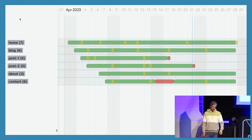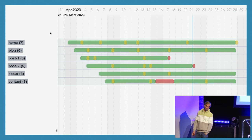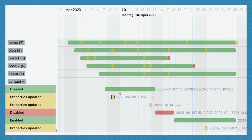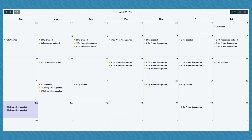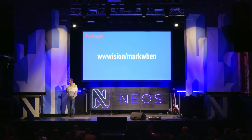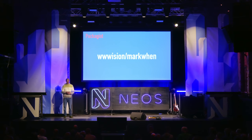You can see at what point in time a node was created, edited, disabled. You could also render it into a calendar view. To be honest, I don't think it's very useful at all. But it's on GitHub for you to dissect, and it's a good example of how to create a custom projection and how to register it with Neos 9.